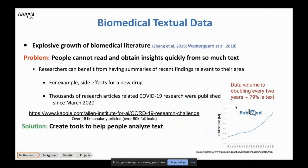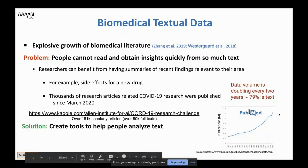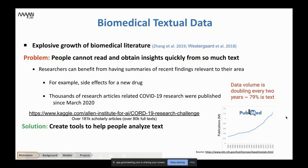Going into details regarding biomedical textual data, we have seen explosive growth of biomedical literature. The figure on the bottom right describes the number of papers indexed in PubMed — it's in the millions and dramatically growing over time. Data volume is doubling every two years, and approximately 79% of it is textual data.